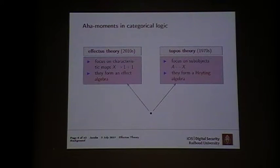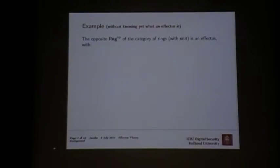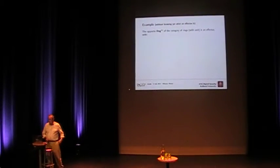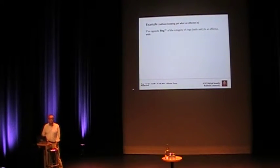This is the starting point for effectus research — effect algebras occur in a very natural way in certain categories, especially categories that capture probabilistic and quantum computation. So we move away from sub-objects to characteristic maps. Let me give you an example. One interesting category in this setting is the opposite of the category of rings. It turns out in semantics it's very natural to look at the opposite form, and this has to do with the predicate transformation, as I will explain later.